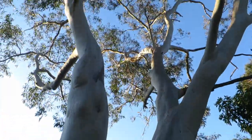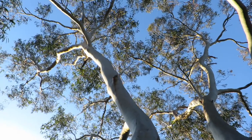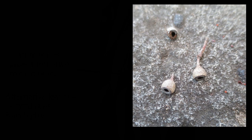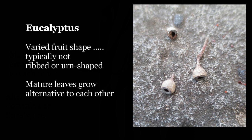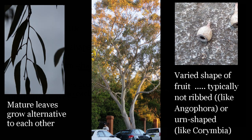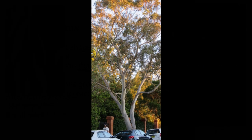Looking at the canopy, when we get a close look at those leaves they're all turning gray and growing alternate. So we're going to look for the fruit now. That fruit isn't an urn-shaped fruit and it isn't a ribbed fruit, so it's in the eucalypt group. This tree, with its leaves growing alternate to each other and with a fruit that isn't urn-shaped and doesn't have ribs, puts it into the eucalypt group.